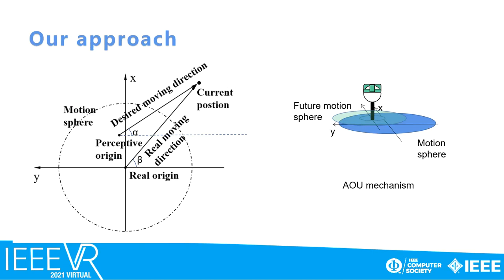Therefore, we propose the AOU technique to eliminate this deviation. As you can find in the right figure, if the user steps back inside the motion sphere and stays still for more than 2 seconds, we set the current position of the HMD as the real origin, and the motion sphere moves to center at the new origin. In this way, the user could easily perceive the origin as it is updated by the user, so the self-centering problem can be solved.